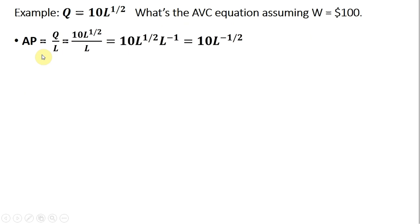First we get average product of labor, the firm's output divided by units of labor. For Q, I'm substituting in 10 times the square root of labor. That's all going to be divided by L.